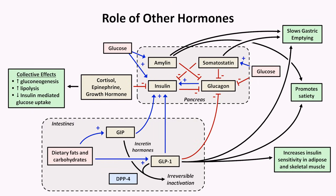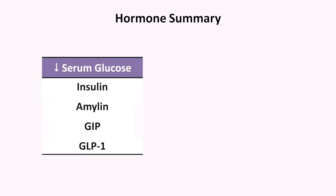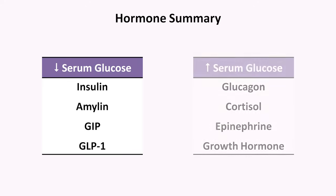You should not try to commit this diagram to memory because it can be summarized without too much loss of information. Hormones whose net effect is to decrease serum glucose are insulin, amylin, GIP, and GLP-1. And hormones whose net effect is to increase serum glucose are glucagon, cortisol, epinephrine, and growth hormone.